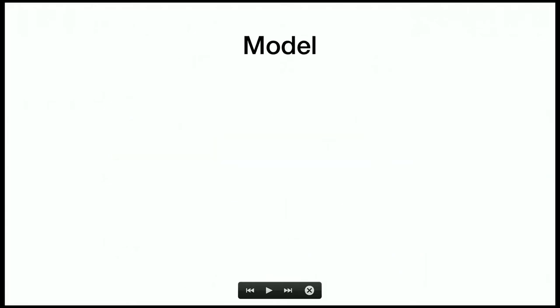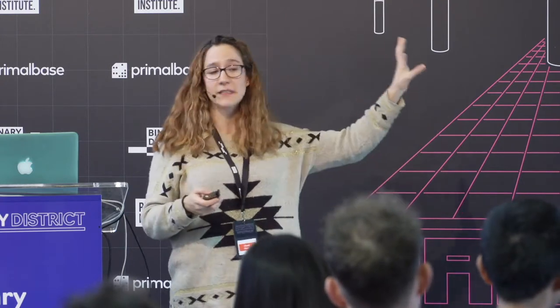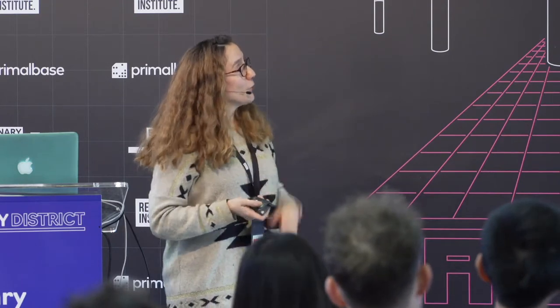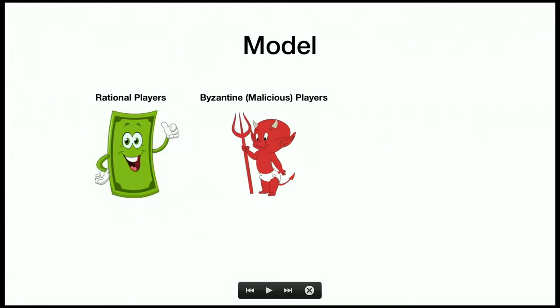In our model we want to consider rational players. In game theory, rational players act to maximize their expected utility — they are not usually considered in the security community but we want to incorporate them. We also want to have Byzantine or malicious players — the security community considers these as bad actors who try to attack the protocol even if it means losing money, unlike rational players who do care about their incentives.